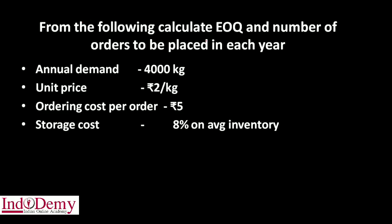From the following, calculate Economic Ordering Quantity (EOQ) and number of orders to be placed in each year. The given information: annual demand is 4000 kg, unit price is ₹2/kg, ordering cost per order is ₹5, storage cost is 8% on average inventory.